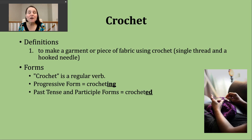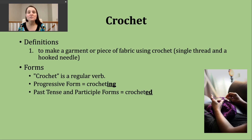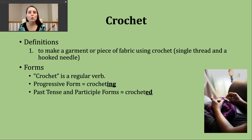So if I want to make the progressive form of this verb, all I'm going to do is add -ing to form crocheting, crocheting. And our past tense and participle forms of this verb can be made just by adding -ed. The -ed ending is just going to make a D sound because this verb ends in a vowel sound. So it should sound like this: crocheted, crocheted.